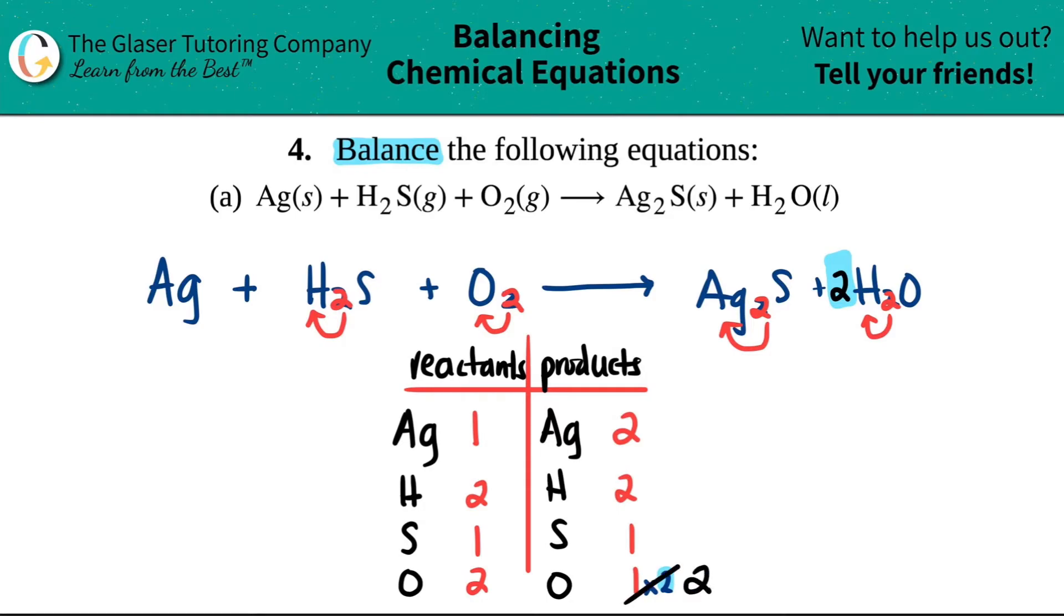But now you have to play fair. You have to take that coefficient and multiply it by every one in that compound. So the oxygens changed, but now the hydrogens changed as well. So how many hydrogens do you have now? Well, I have two times two is four. So I'm going to just get rid of the two hydrogens on the products side, and I'm just going to say four. Now it changes things up.